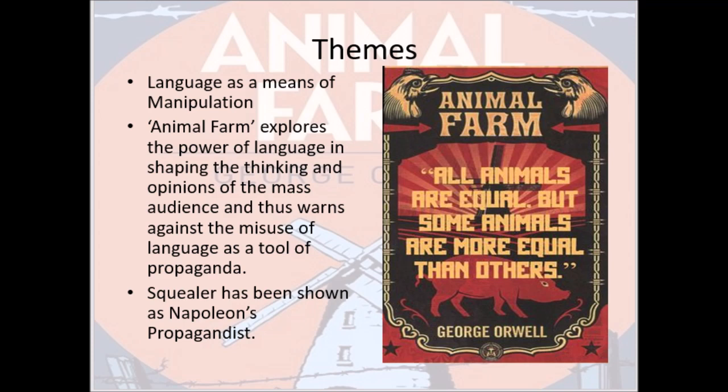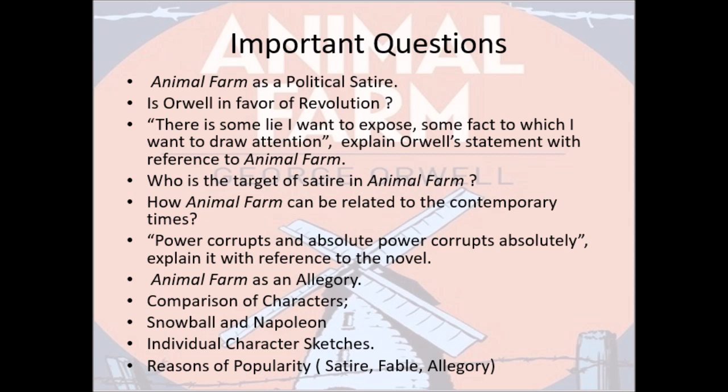Moving on to significant quotes from the novel: 'Four legs good, two legs bad'; 'All animals are equal, but some animals are more equal than others' — these are modified versions of the Seven Commandments. And: 'The creatures outside looked from pig to man, and from man to pig, and from pig to man again; but already it was impossible to say which was which.' These quotes contain deep meaning in themselves.